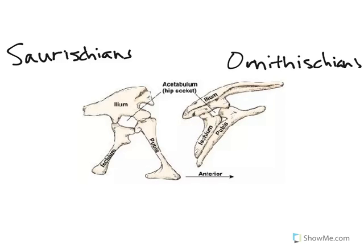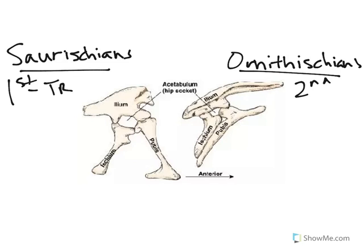I really just want to take a moment here to review the difference between our Saurischian dinosaurs and our Ornithischian dinosaurs. First of all, our Saurischian dinosaurs evolve first — they appear much earlier. Our Ornithischian dinosaurs evolve second. We see our Saurischia evolve in the Triassic, and our Ornithischian dinosaurs evolve in the Jurassic.